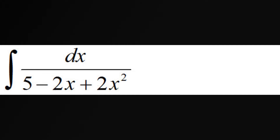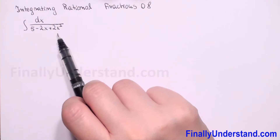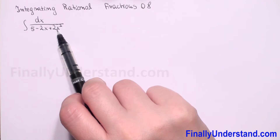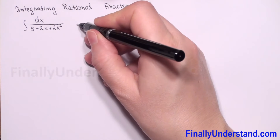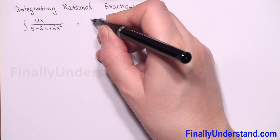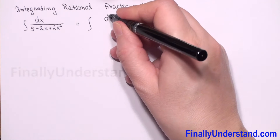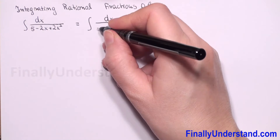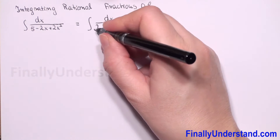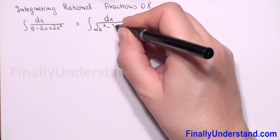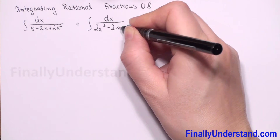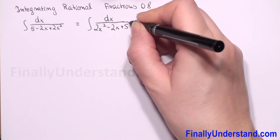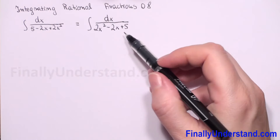We have an integral of a rational fraction. Let me rewrite our numerator starting from the highest power. This is equal to the integral of dx over 2x squared minus 2x plus 5.